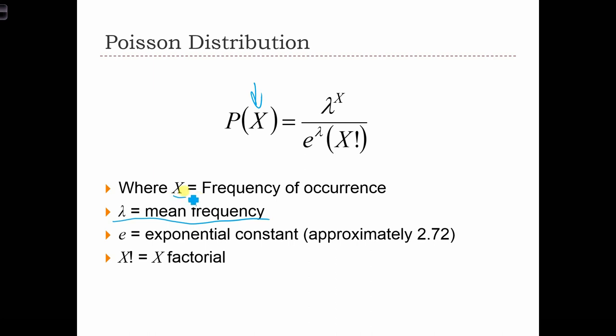X is the number of occurrences that we're interested in knowing the probability for. e is an exponential constant. If you aren't very comfortable with calculus, it's simple to remember that e is just a letter that we use to represent the number 2.72.